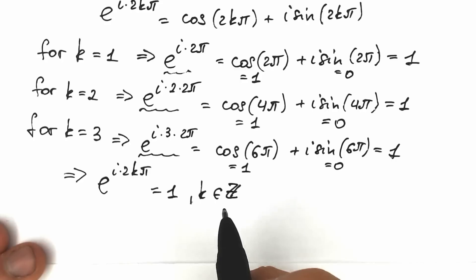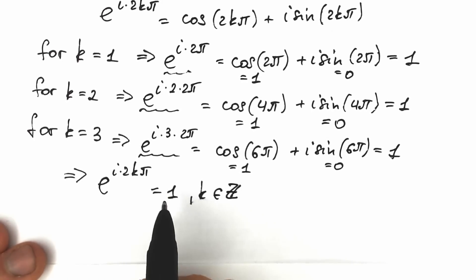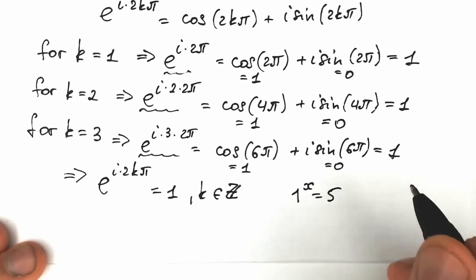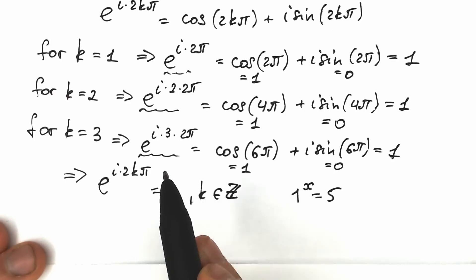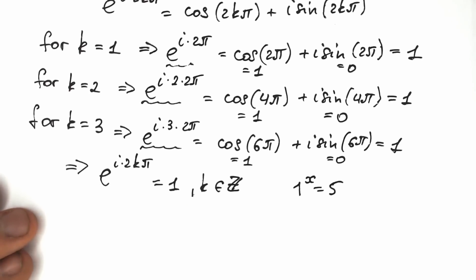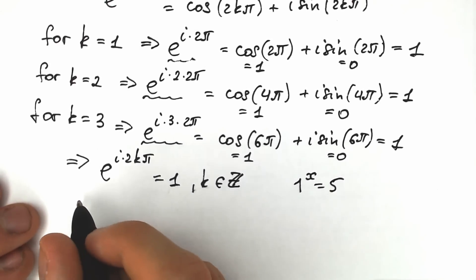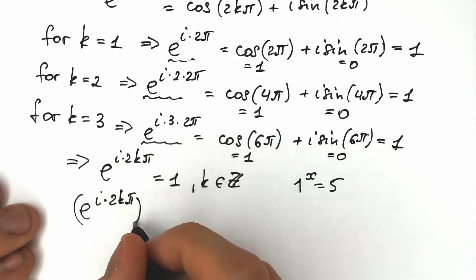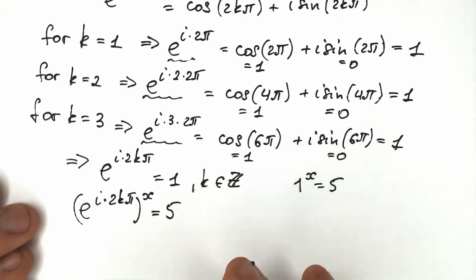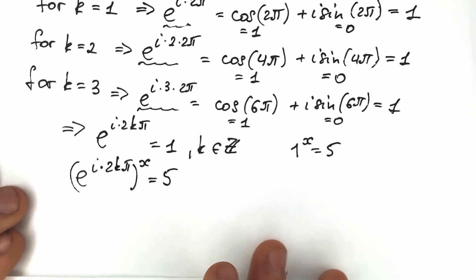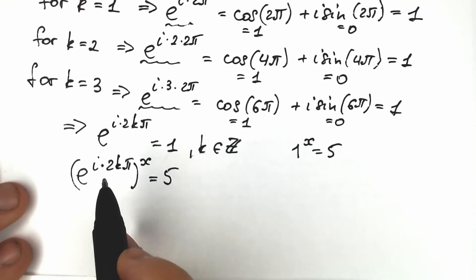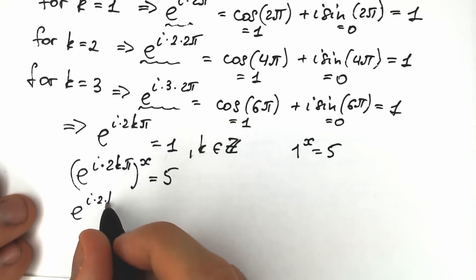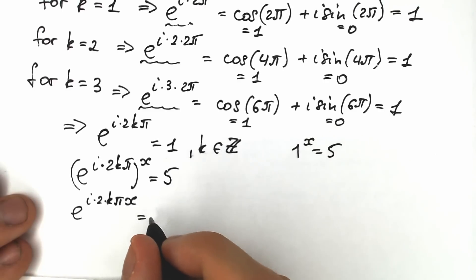This is a really important moment — we're going to plug this expression in place of our 1. Because in the beginning we had 1 to the x equal to 5. Now, instead of 1, let's substitute e to the power i times 2k pi. So we get e to the power i times 2k pi, all to the power x, equal to 5. Using the power rule, we can multiply the exponents: e to the power i times 2k pi times x equal to 5.